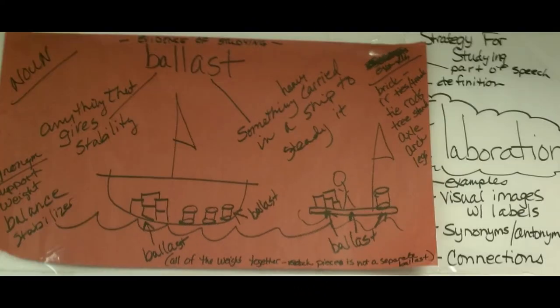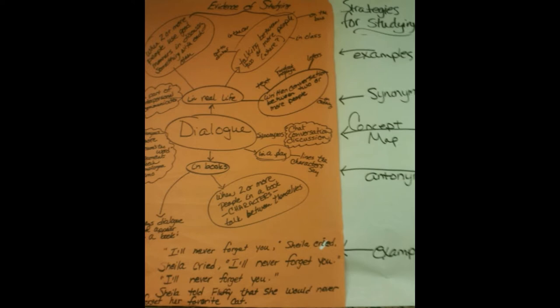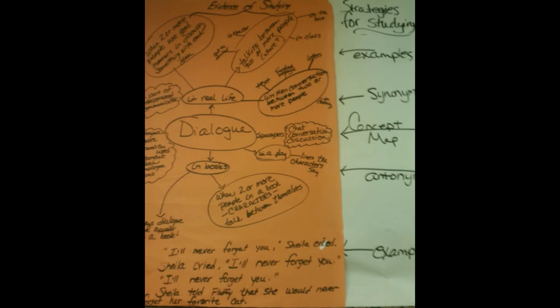Here's another illustrated vocabulary list where each word is illustrated individually, and here's a co-created chart that my students and I made about the concept of ballast — what it looks like, different words and pictures describing this vocabulary word. And again we have another nice concept map showing all sorts of information from an article we read on the Hindenburg. We elaborated about dialogue and other important terms in literary study.